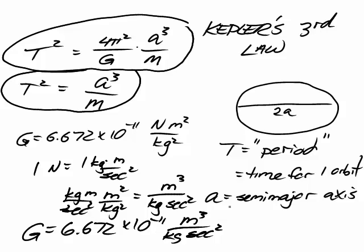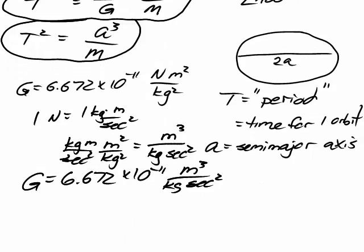So, big G is 6.672 times 10 to the negative 11 meters cubed over kilograms seconds squared, written in the most basic SI units. What we're going to do now is, what if we go ahead and convert from meters into astronomical units, kilograms into solar masses, and seconds into years, what do we end up with? So, let's scroll down and do that.